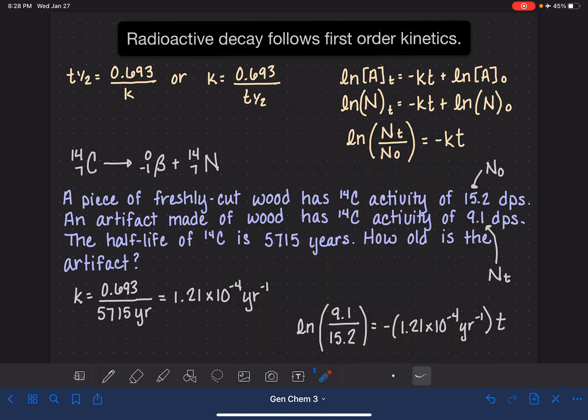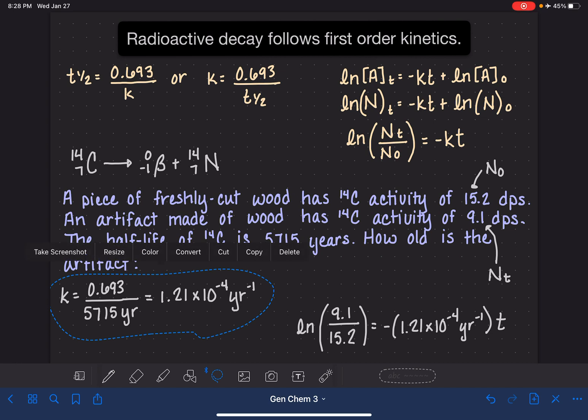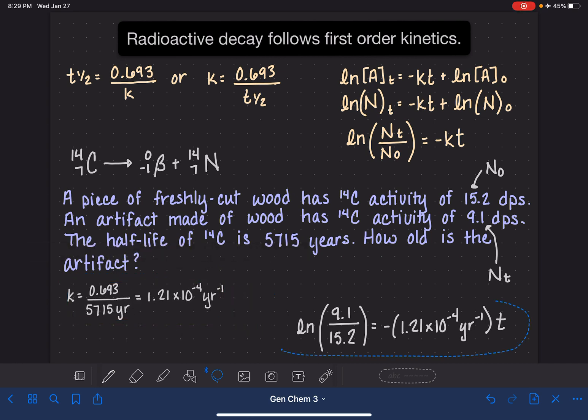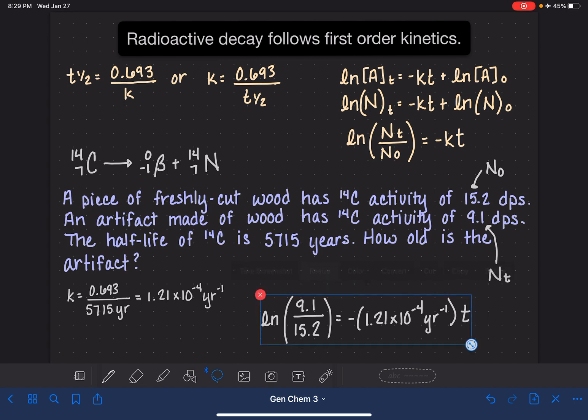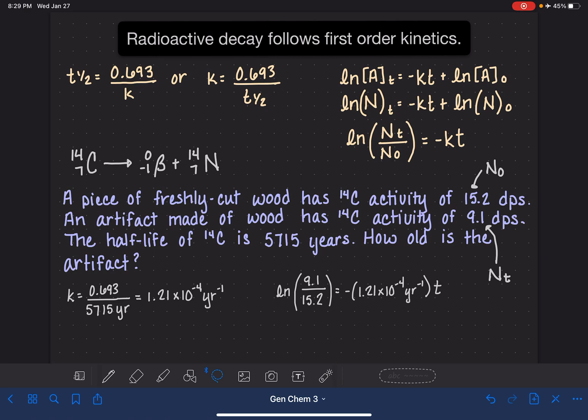So I'm going to calculate the math on this problem. So I'm going to kind of make some room for myself to write the answer here. And I'm going to solve this problem mathematically. I'm going to solve it by doing the 9.1 divided by 15.2 and then taking the natural log of that result. And then I'm going to divide that by negative 1.2 times 10 to the minus 4. And this gives me a time of 4,275 years.